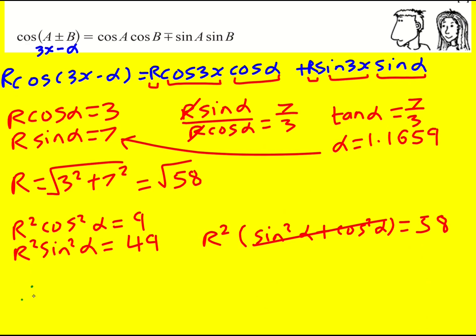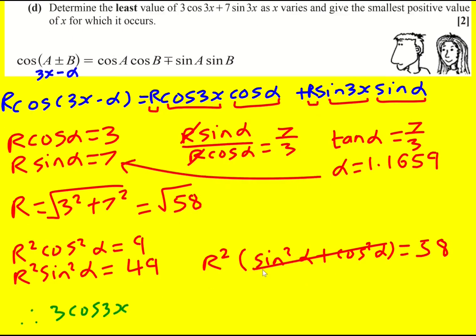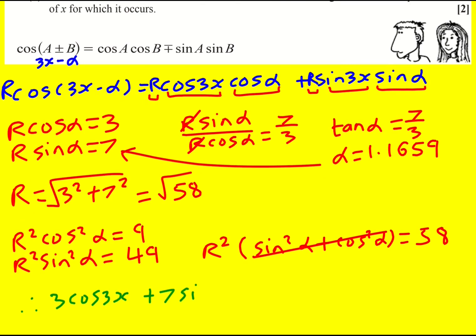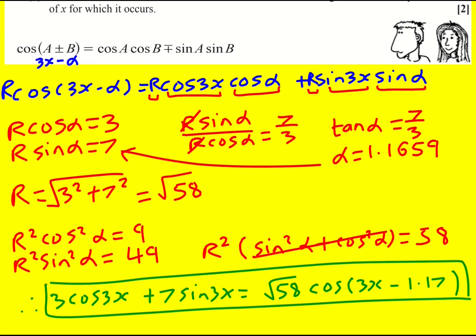And we're basically done. Therefore, 3 cos 3x, what was it, a plus? Sorry, I just need to check. Plus 7 sine 3x is going to equal root 58. That's my R, and then it was cos 3x minus 1.17 if I'm rounding it to three significant figures. Okay, great. So we've got a sine and a cos term. We've absorbed them essentially into a single cos term that's just got a few transformations applied to it. So that was part A.